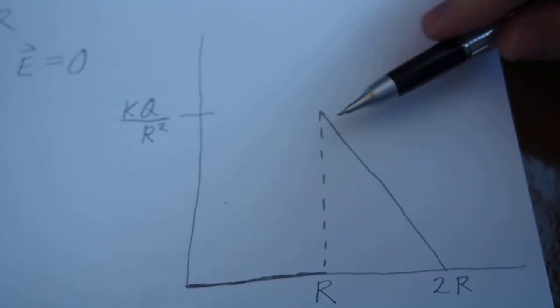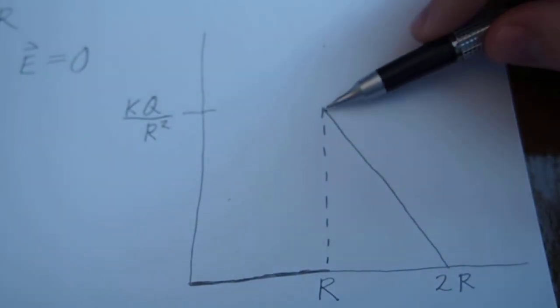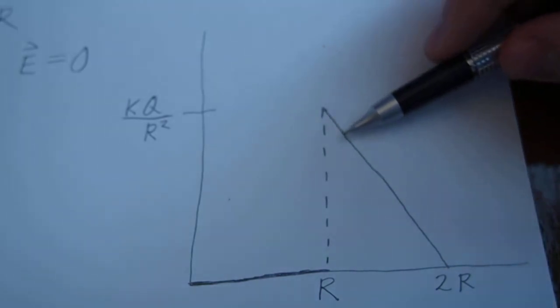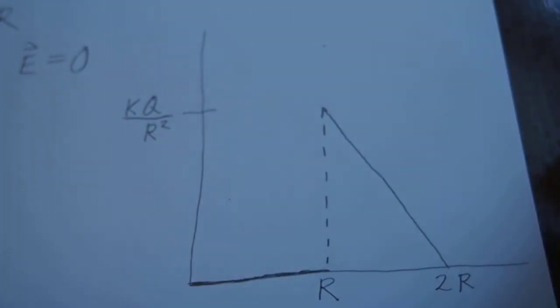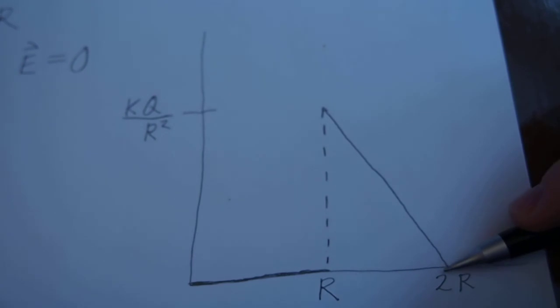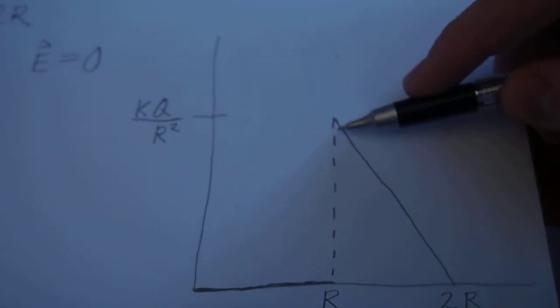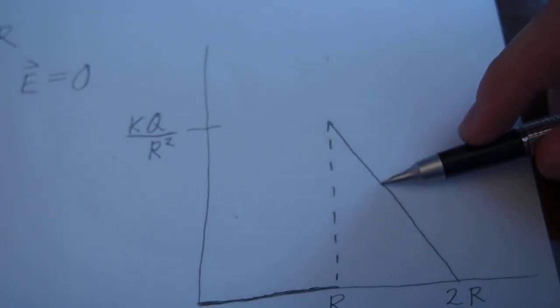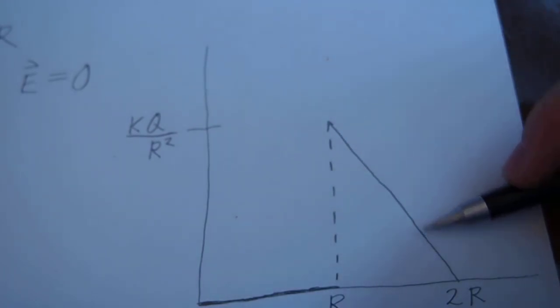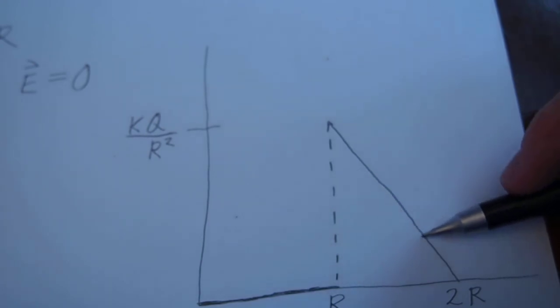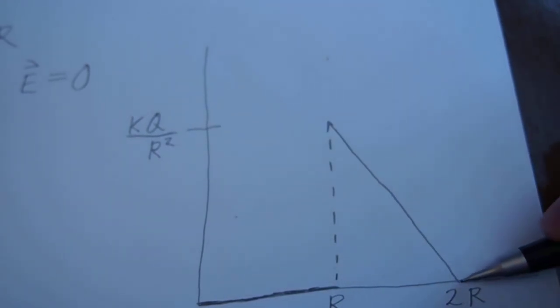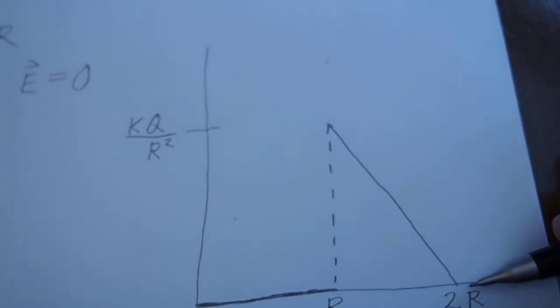And then, from there on, it decreases to 2R. And then, it's zero because that is where you have the full amount of the outer sphere. Because, as you're going along, you're seeing more and more of this outer sphere canceling out the inner sphere, which is right there. And, more and more subtracted off until finally, the net charge is zero right outside 2R.